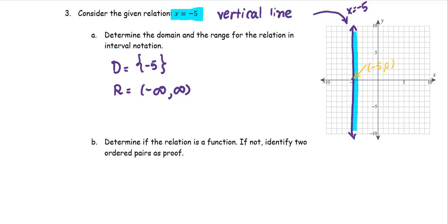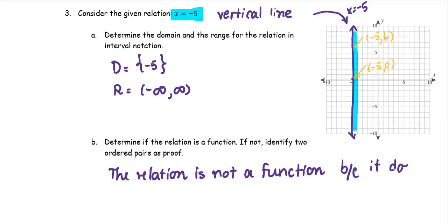For example, the ordered pair negative 5 comma 0 and another pair, let's pick one point over here. The x is still negative 5, the y changes to positive 6. The same x coordinate or first coordinate is mapping to two different values for the second coordinates. We say that the relation is not a function because it does not pass the vertical line test. The example of the two ordered pairs would be negative 5 comma 0, negative 5 comma 6.